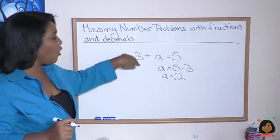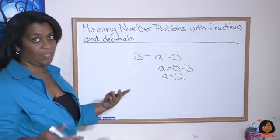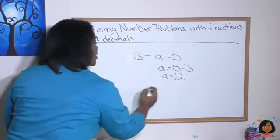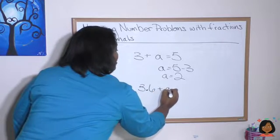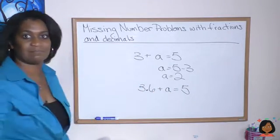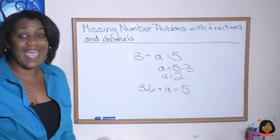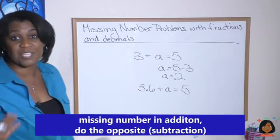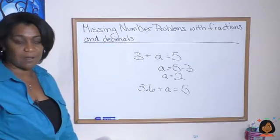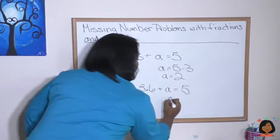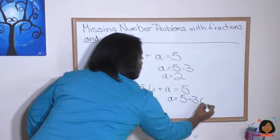Well what if instead of whole numbers, we had decimals or fractions to deal with? Instead of 3 plus A equals 5, what if I had 3.6 plus A equals 5? You really shouldn't be confused by this. You do exactly the same thing. For a missing number in addition, you keep the same rule. We do the opposite to find that missing number. We're going to subtract here.